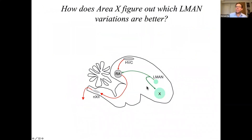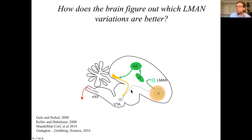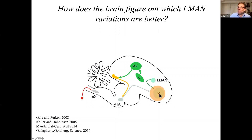So how does area X figure out which L-MAN variations lead to a better song? Every axon that goes from L-MAN to the motor pathway sends a collateral to area X, so area X sees an image of what all 6,000 L-MAN neurons are doing at every moment in the song. Area X also receives a dopaminergic input from the ventral tegmental area, which receives a descending projection from an auditory pathway known to process error-related signals during singing. In a beautiful study from Jesse Goldberg's lab, Vikram Gadakhar and Jesse showed that VTA neurons exhibit a kind of performance prediction error signal similar to reward prediction error signals observed by Schultz and others in the ventral tegmental area of mammals. So in principle, area X can correlate L-MAN activity with song performance.